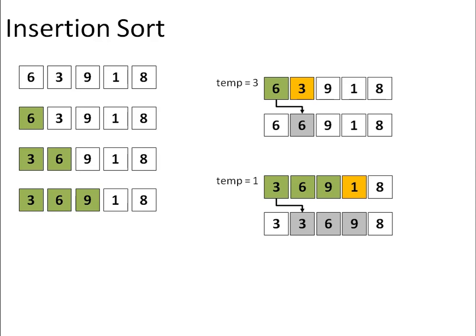After this, we have reached at index 0. So we have to stop and place 1 at the first index position of the array. So there are 4 elements sorted now and they are present in the left side of the array as you can see here.